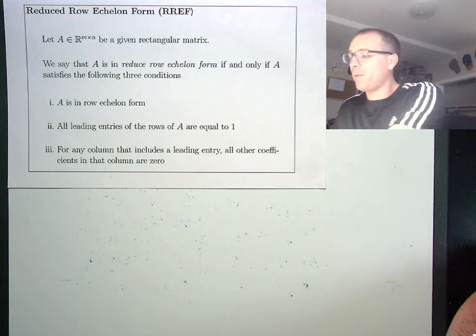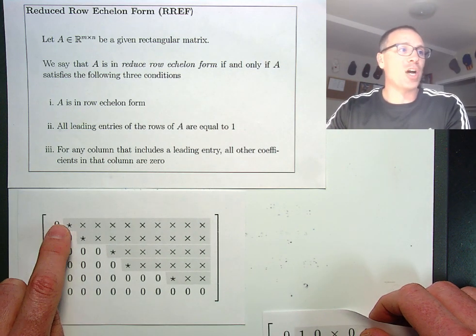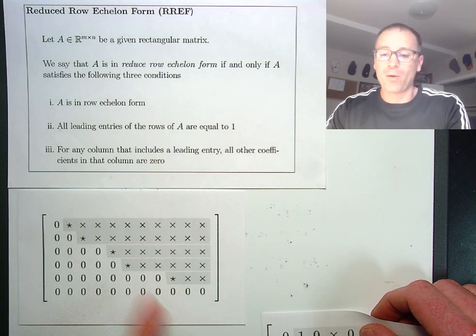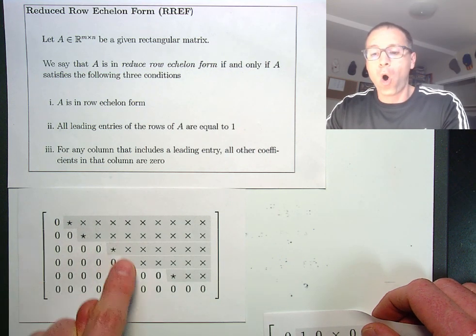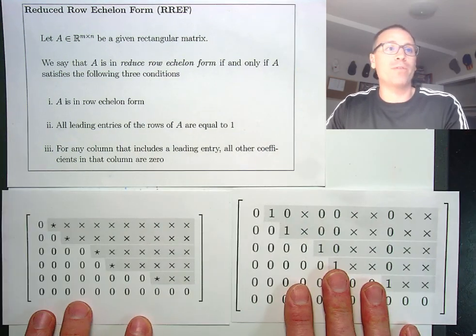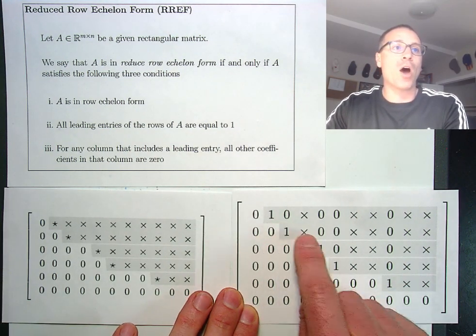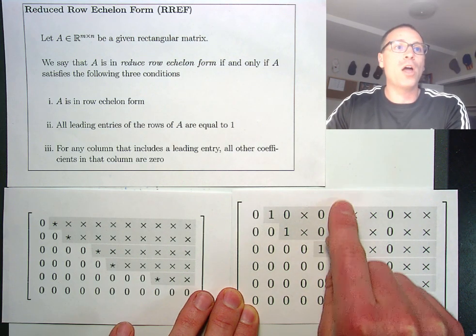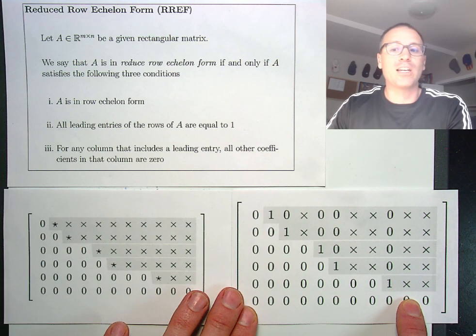Last example that we saw we had this row echelon form matrix. We're going to turn each of the leading entries to one probably via dilation and then we're going to cancel out for each column that involves a leading entry. All other entries must go to zero and that's exactly what we've done here. We've turned all leading entries to one and then all non-leading entries in that column go to zero. So there's only a single non-zero in each of those columns that involves a leading entry.